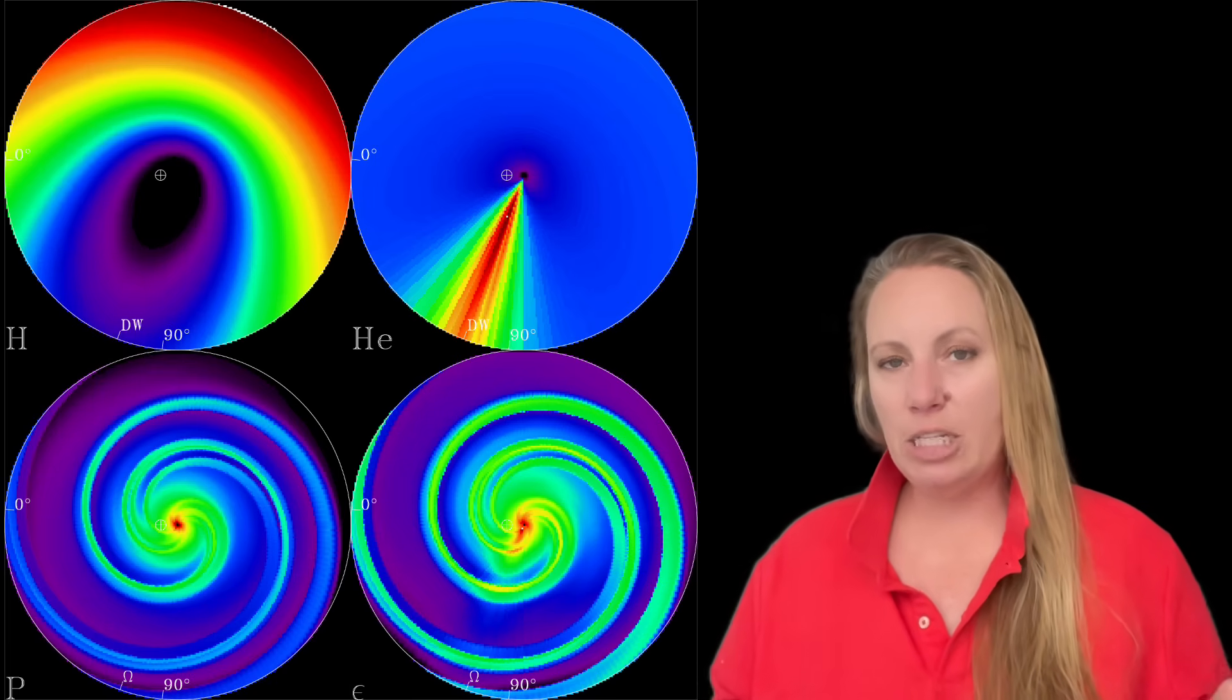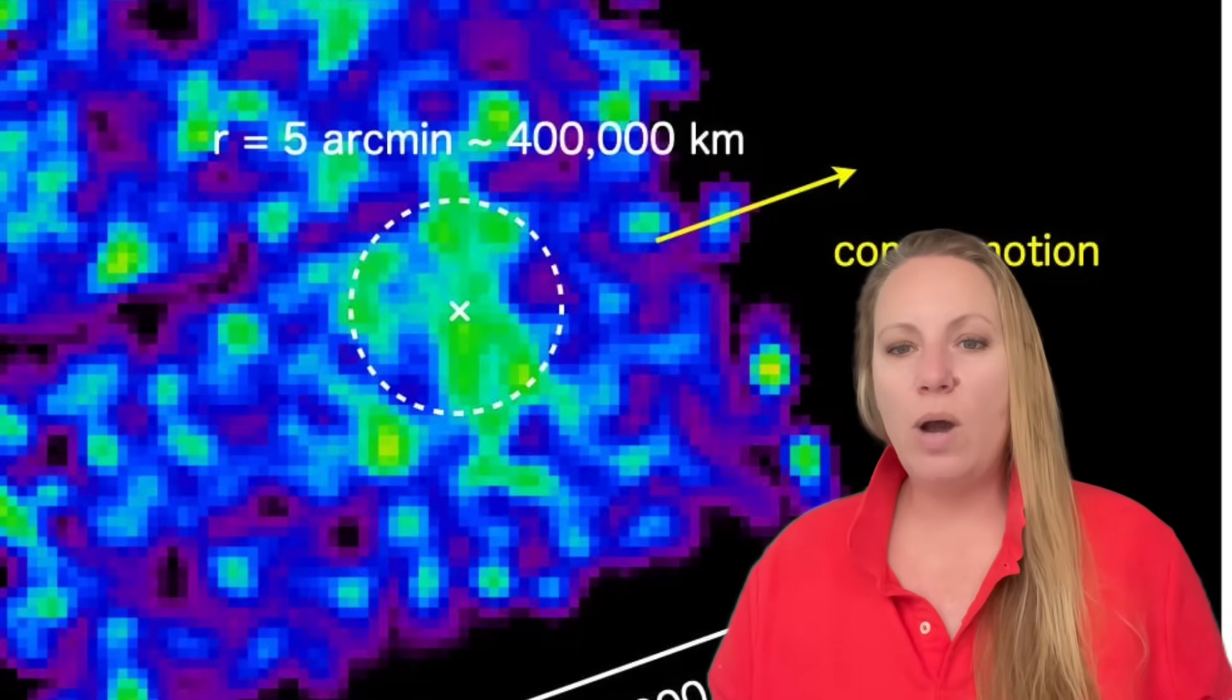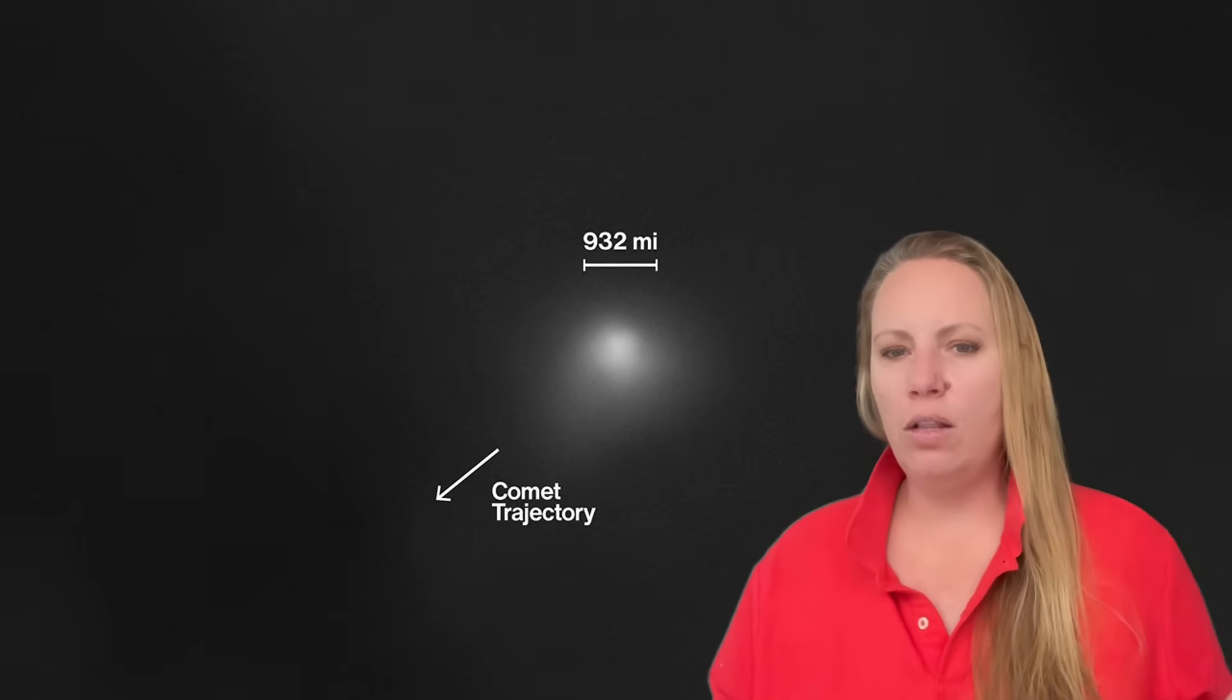This is the same explanation I gave in a previous video for the PRISM X-ray detection. Now we have two independent X-ray observations - one from JAXA's PRISM and one from ESA's XMM-Newton. Both see the same thing, both reconfirm each other: a cloud of gas around 3i Atlas is interacting with the solar wind.